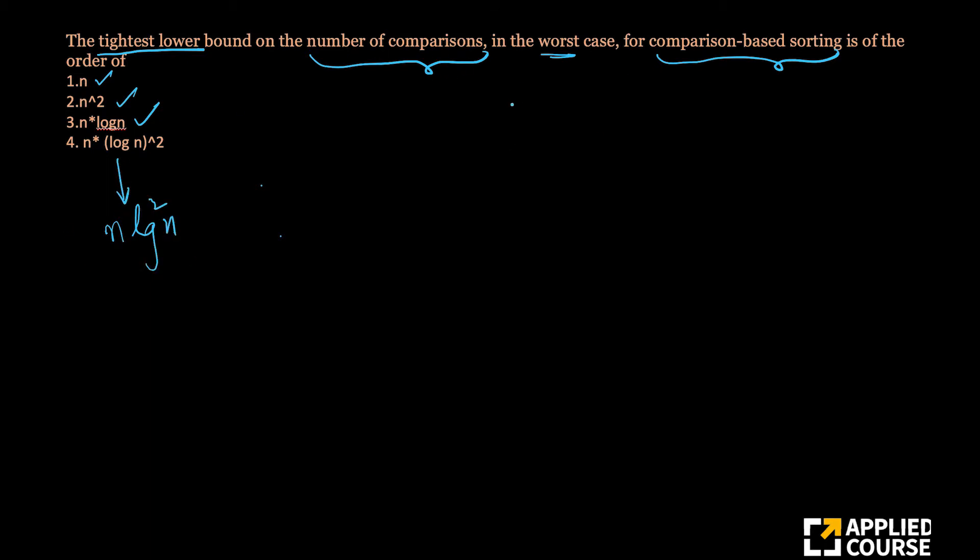We have also proved that for any comparison-based sorting algorithm, the number of comparisons in the worst case would be order of n square. We have already shown this.